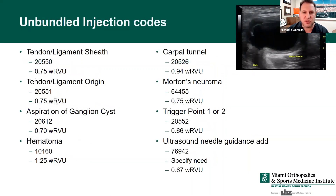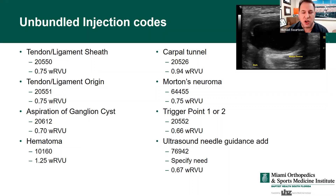There are unbundled ultrasound codes for tendons, ligaments, ganglion cysts, hematomas, and nerve-related things like carpal tunnel and Morton's neuroma — you add code 76942. That tells the insurance company you used ultrasound to perform the injection. You must specify why: to avoid vascular injury, because the patient's body habitus made it difficult to see, or to find a specific area of tendon damage. The most important thing is documenting why you used it.